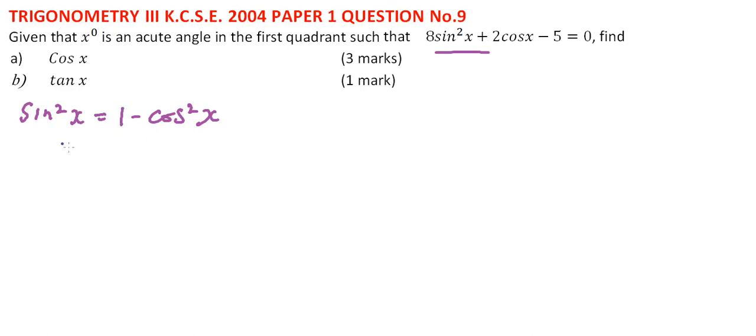We have 8(1 - cos²x) + 2cos x - 5 = 0. When you open the bracket and arrange the equation, you end up with 8cos²x - 2cos x - 3 = 0.